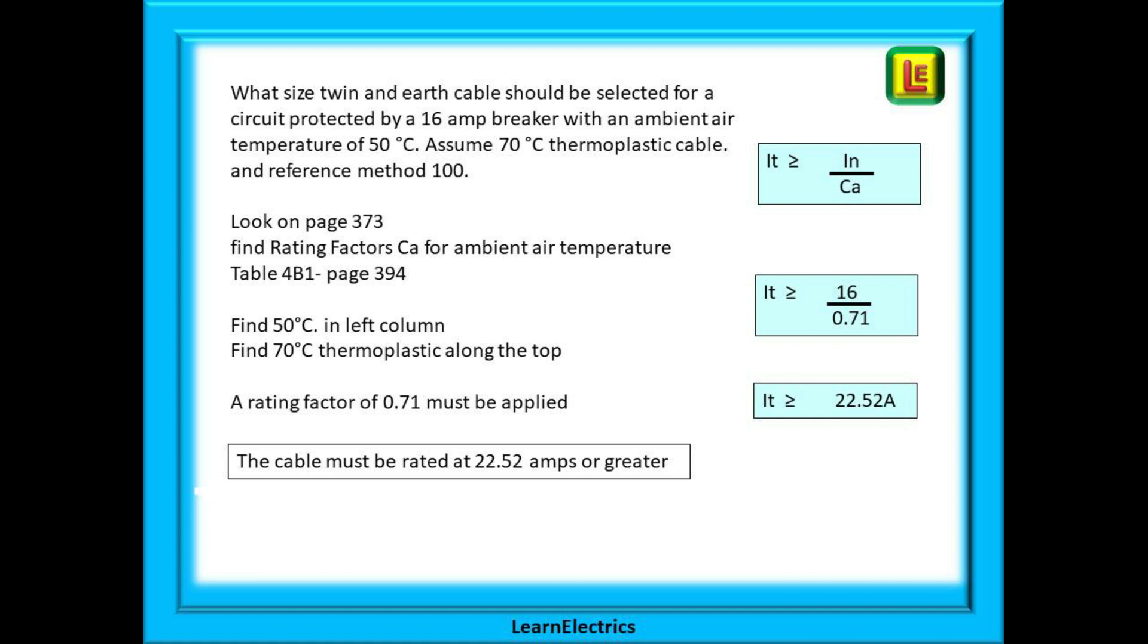This is table 4B1 and you will find this on page 394. Find 50 degrees in the left column. Find 70 degrees thermoplastic along the top and where they cross tells us that a rating factor of 0.71 must be applied. Divide IN the size of the breaker which is 16 amps by 0.71 and the new tabulated rating is 22.52 amps.